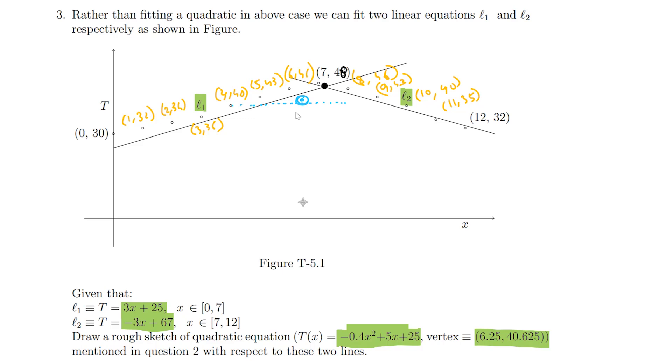Clearly our quadratic is below the points that we have been given. And this being the x square coefficient is minus 0.4, which is less than 0.